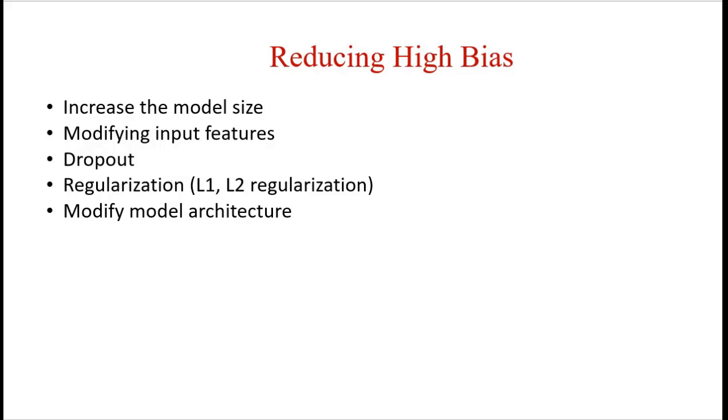Sometimes it might be possible that input features are creating certain problems in training. So we can identify such input features and remove them. We can also use dropouts. Dropout will randomly remove nodes from the layers, which will avoid concentration of learning on one particular node. Regularization is another way to reduce high bias.